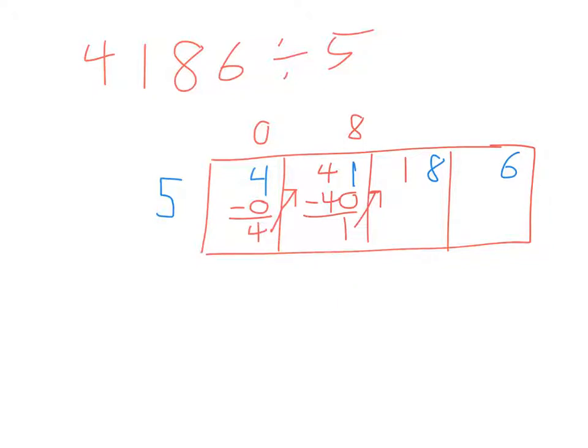Divide, multiply, subtract, bring down. How many times does 5 go into 18? Three. Three times 5 is 15. 18 minus 15 gives me a difference of 3. Bring the 3 up. Start the process over.